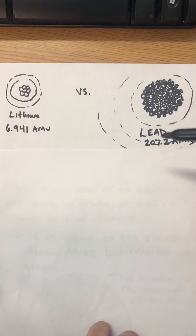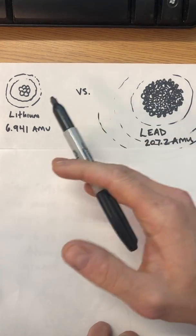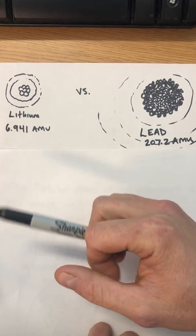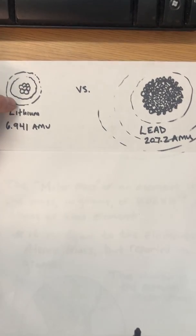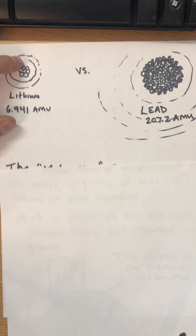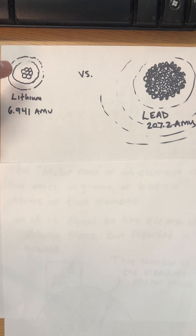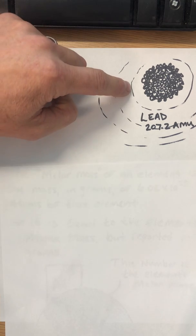So they're just such different sized atoms that you can't expect the same number of each to have the same mass total, right? And so just like you can't expect 12 lithium atoms to have the same mass as 12 lead atoms, you can't expect Avogadro's number of lithium atoms to have the same mass as Avogadro's number of lead atoms.